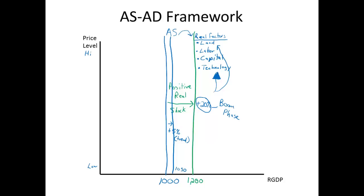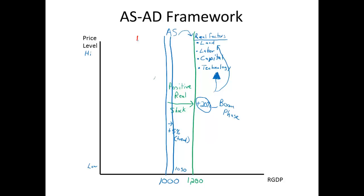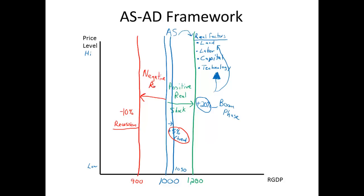How could those factors increase in the real world that much, that fast? We do have examples where real business cycle theory can explain booming economic growth. Turning it around, we also have examples where real business cycle theory can explain a sudden large drop-off in production — let's say we go down to 900, which is a minus 10%. That's a recession in GDP terms. We have a minus 10% growth — well below the trend of 5%. What's going on? We're going to look for a negative real shock: we lost one or more factors of production. Something bad happened to our land, our workers, our capital, or our technology level, making the economy less capable of producing goods.